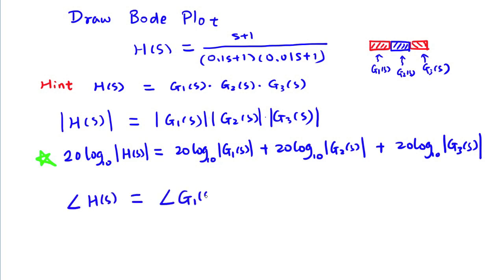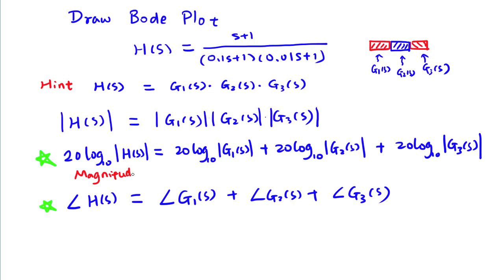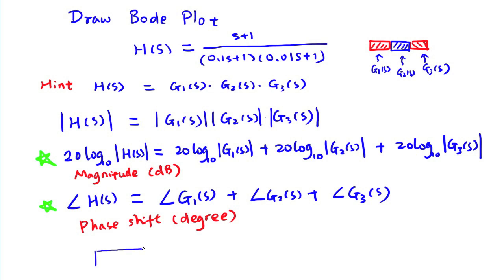We are also interested in the overall phase shift. It can be calculated by adding the phases of the three small building blocks. Here is the magnitude in decibel format and the phase angle with units of degrees or radians. The Bode plot is a very useful way to represent the gain and phase of the system response which undergoes sinusoidal input.